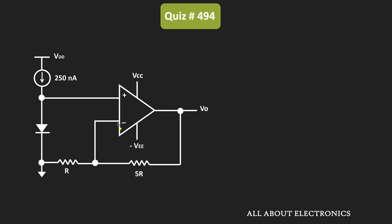Here we have been given that all the components in the circuit are ideal, which means this op-amp is also an ideal op-amp. And that's why no current is flowing into the op-amp terminal. That means this 250nA current will flow through this diode. So we can say that the diode current Id is equal to 250nA.